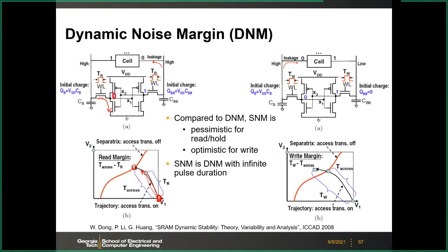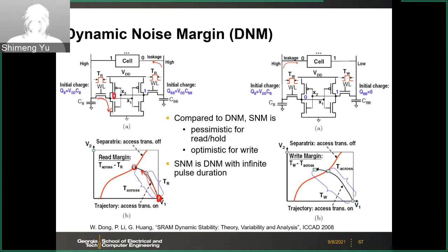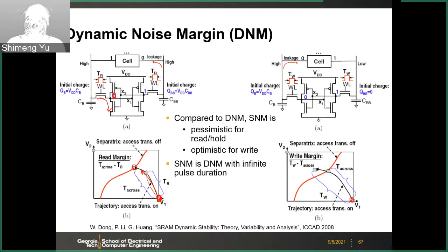For the write operation, it is the opposite: you open the word line for duration T_w, and you want T_w to be long enough — longer than T_cross — to trigger the flip. Once the trajectory point moves past the separatrix, you can turn off the word line and the state will automatically flip to the other one.